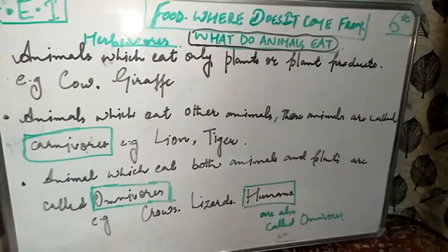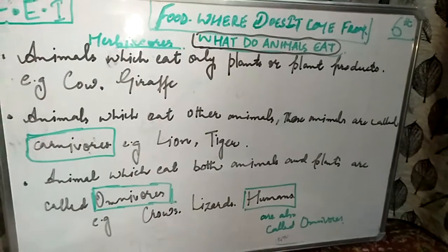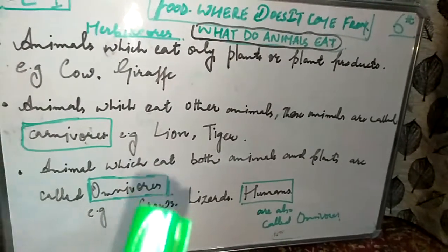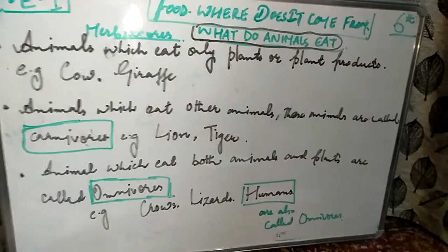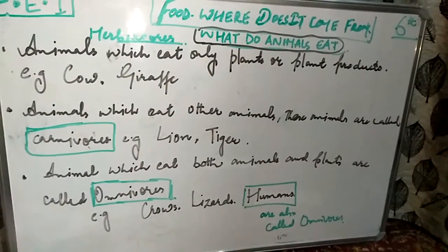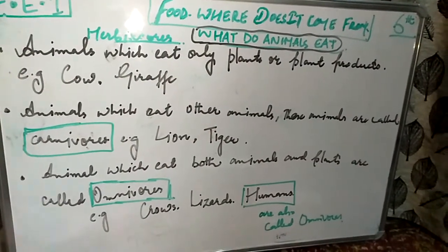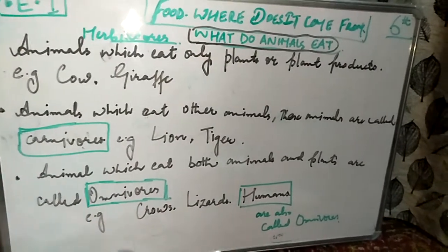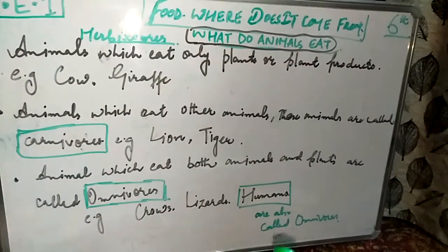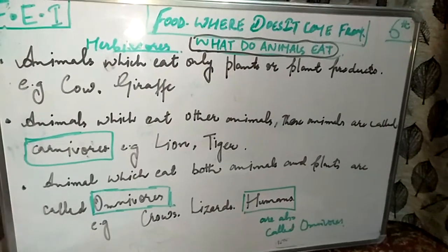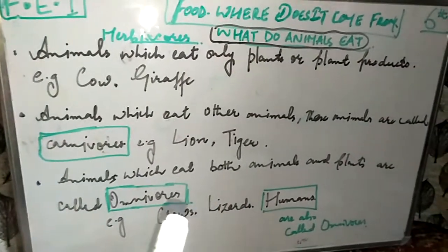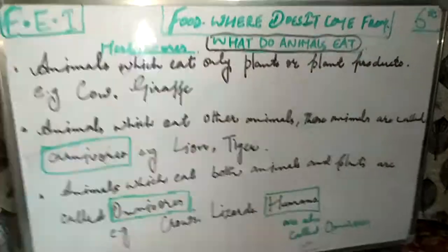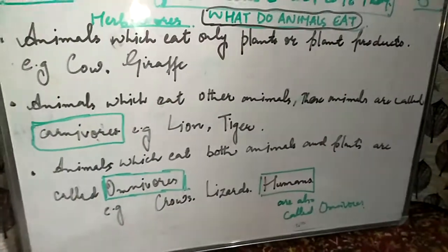Crows and lizards consume both animals and plants. Animals which eat both plants and animals are called omnivores. So what are animals that consume both plants and animals called? They are called omnivores.